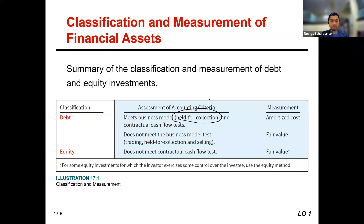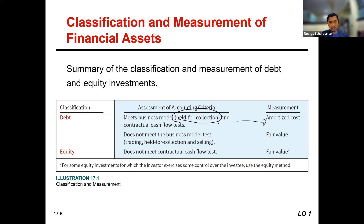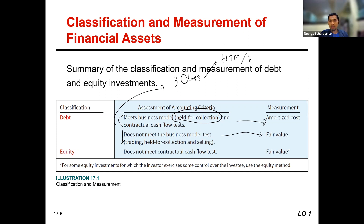If the investment is held for collection, then the method is amortized cost. However, if the company holds this investment for trading purpose, or it is held for collection but with a possibility to sell before maturity, then the method used will be fair value. There are three classifications: HTM (held to maturity or held for collection), trading, and a mixed purpose — and mostly HTM applies to debt instruments.